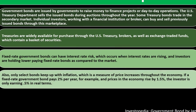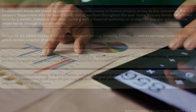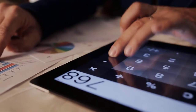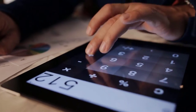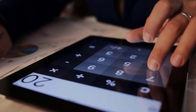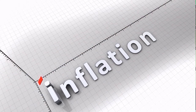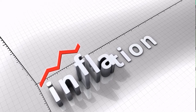Only select bonds keep up with inflation, which is a measure of price increases throughout the economy. If a fixed rate government bond pays 2% per year and prices in the economy rise by 1.5%, the investor is only earning 0.5% in real terms. Bonds tend to be a little more boring because you have a fixed rate of return and you're not following the drama of market swings as closely. We also have to consider the inflation factor when evaluating the real returns we are receiving.